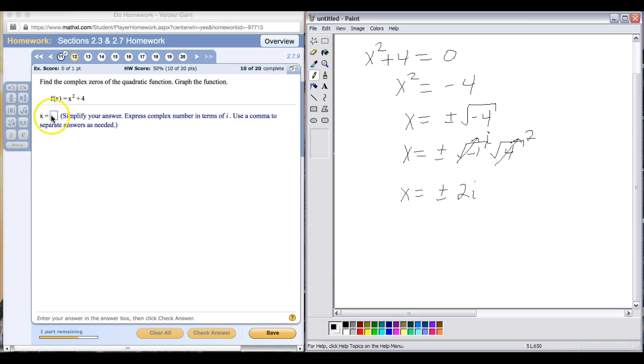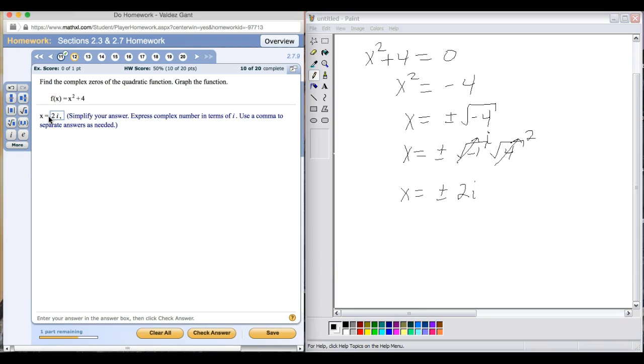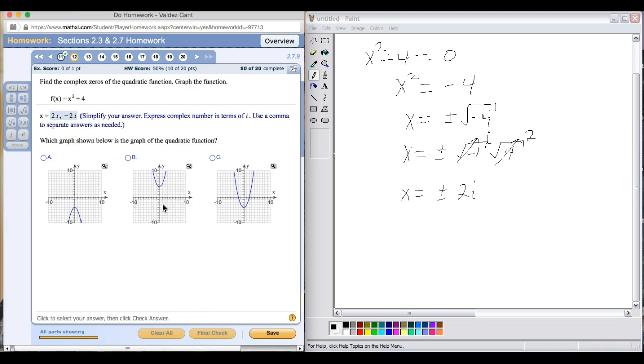We'll go ahead and type that in: two i and minus two i. For the graph, if you remember from a previous video about the discriminant, we know that this particular function would not be crossing the x-axis because that's why we're getting complex solutions. But if we know about transformations, x squared plus four is a vertical shift upward by four units. So our correct graph here would be B.